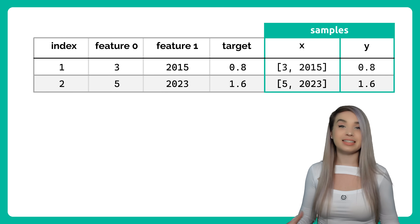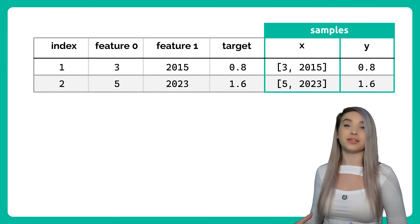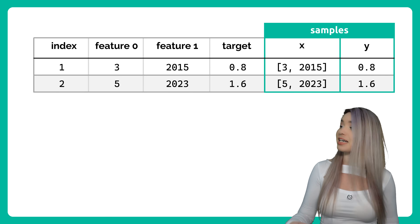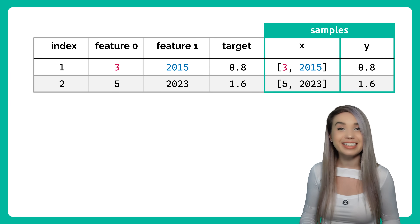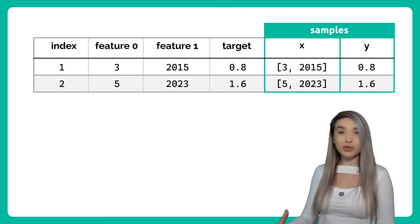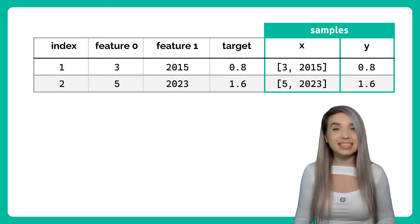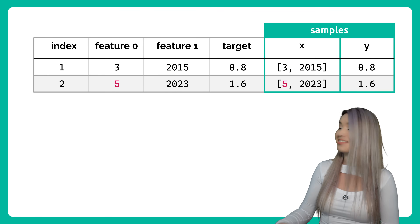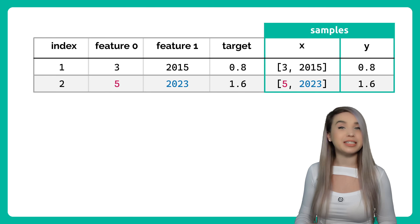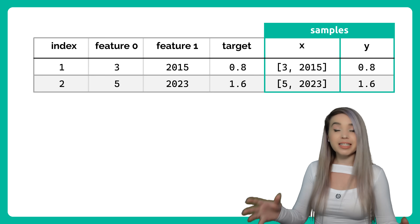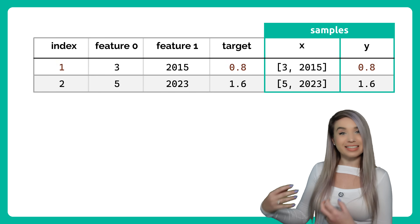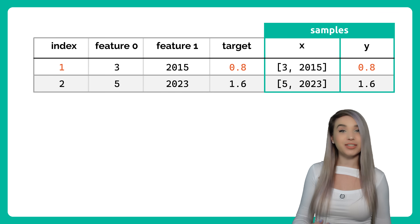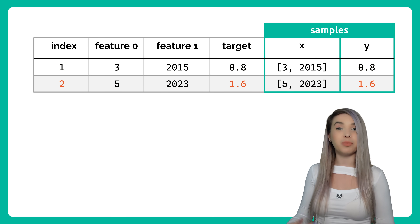In that case, x1 would be a list of 3 and 2015, x2 would be a list of 5 and 2023, and then similarly, y1 is 0.8 and y2 is 1.6.